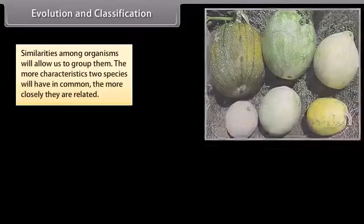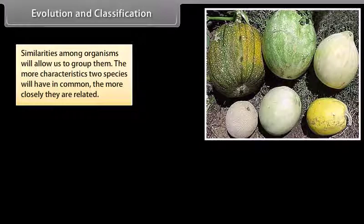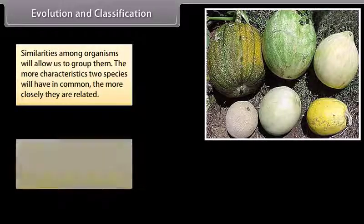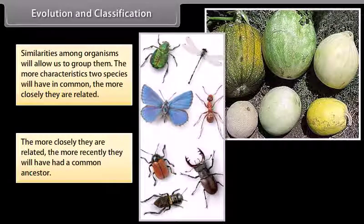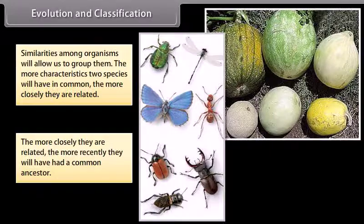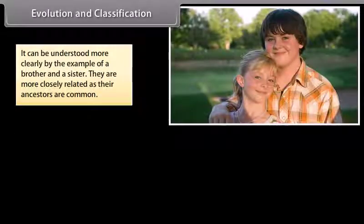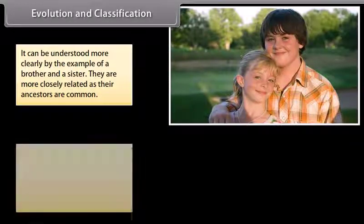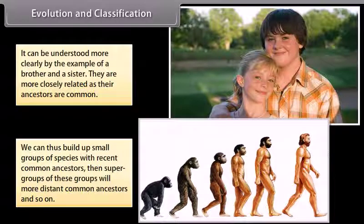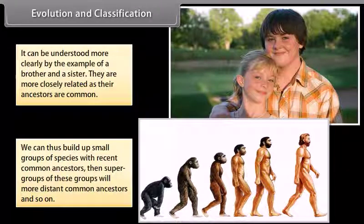Evolution and classification: Similarities among organisms will allow us to group them. The more characteristics two species have in common, the more closely they are related. The more closely they are related, the more recently they will have had a common ancestor. It can be understood more clearly by the example of a brother and a sister. They are more closely related as their ancestors are common. We can thus build up small groups of species with recent common ancestors, then supergroups of these groups with more distant common ancestors, and so on.